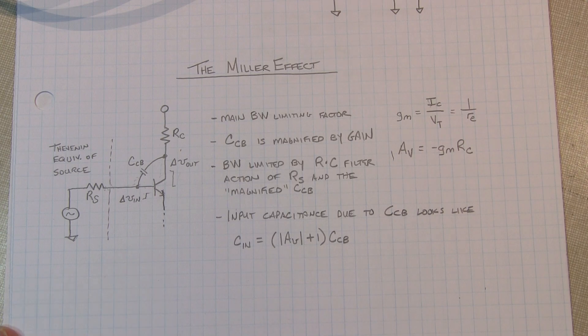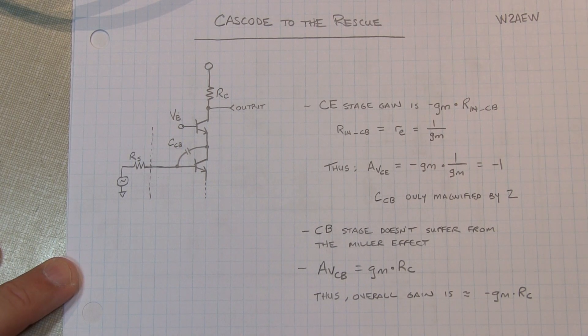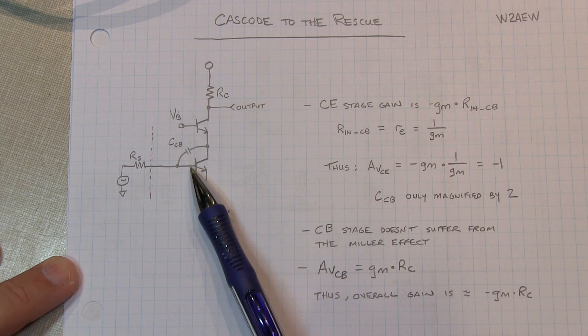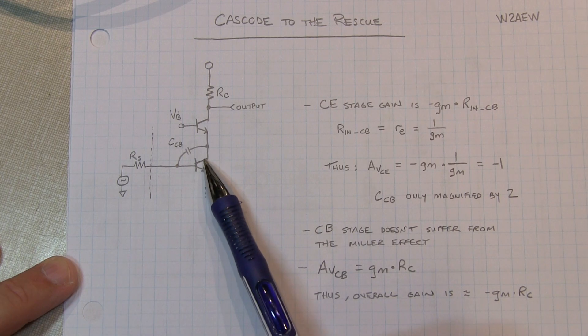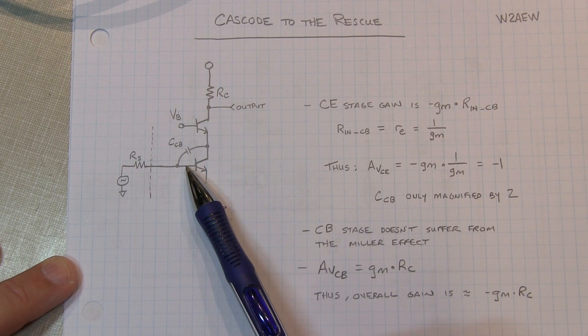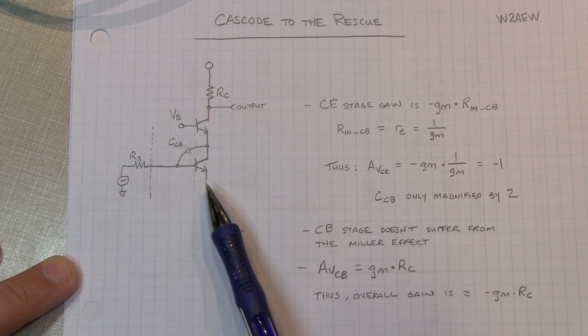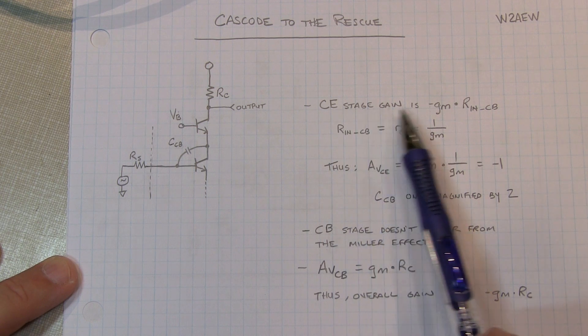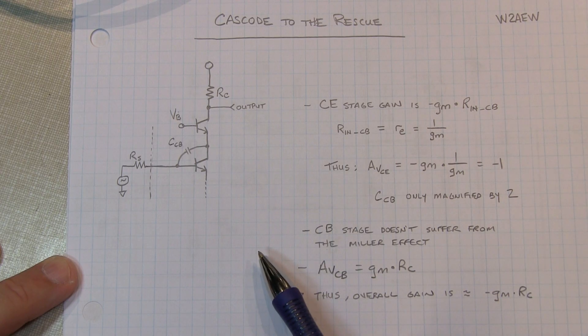So the cascode amplifier helps us deal with that. The cascode amplifier comes to the rescue to alleviate the problems with the Miller effect. And it does so by reducing the gain of the first common emitter stage. If you think about it, the gain of a common emitter stage is equal to gm times the load at the collector assuming you've got no degeneration. So therefore the common emitter stage gain is equal to gm times the input resistance of the common base amplifier.